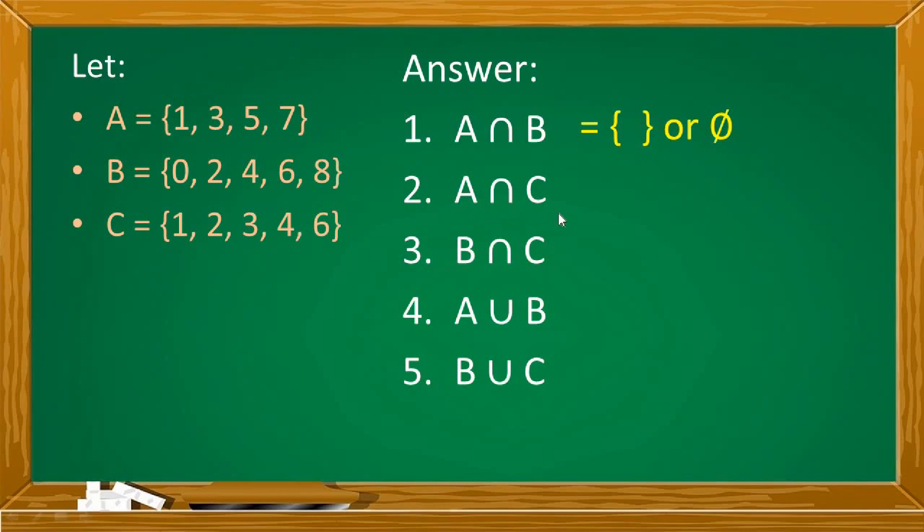Next number 2. How about A and C? Set A and set C both have 1 and 3 as elements. So these are their intersections.